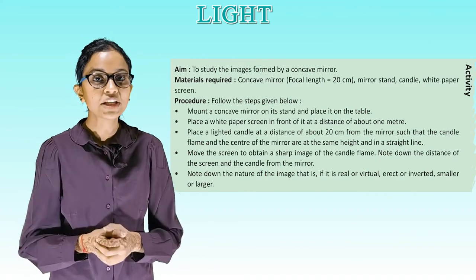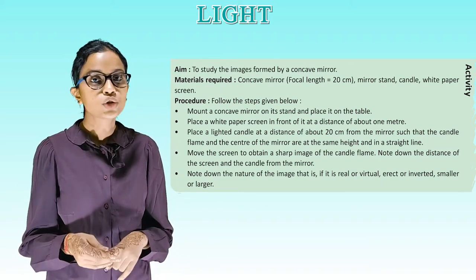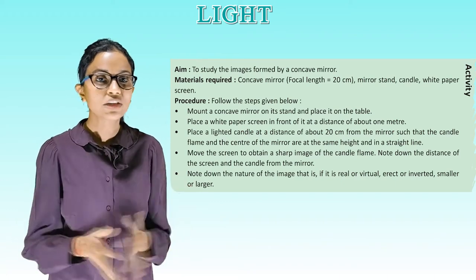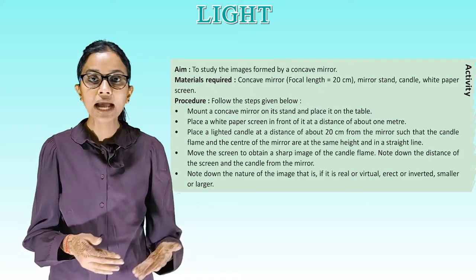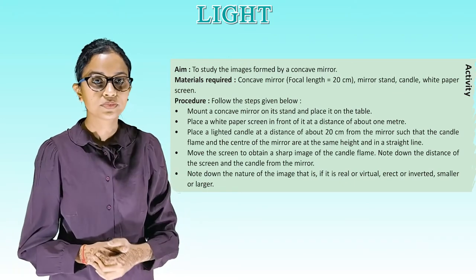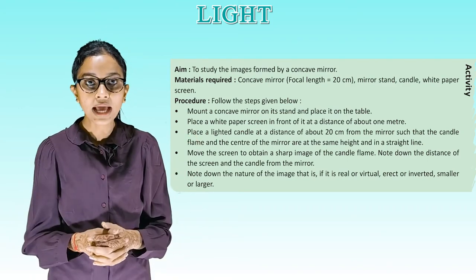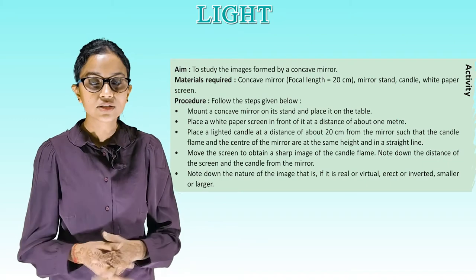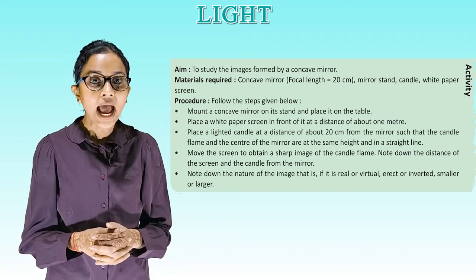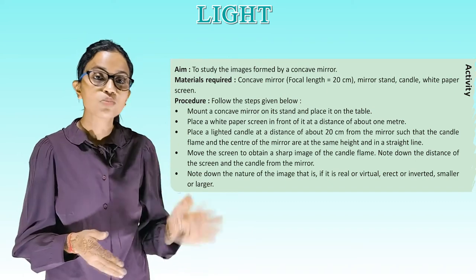Activity — aim: to study the image formed by a concave mirror. Materials required: a concave mirror (focal length = 20 cm), mirror stand, candle, white paper screen. Procedure: mount the concave mirror on its stand on a table. Place a white paper screen in front at about 1 meter. Place a lighted candle at about 20 cm from the mirror so that the candle flame and center of the mirror are at the same height. Move the screen to obtain a sharp image. Note the distances and the nature of the image — whether real or virtual, erect or inverted, smaller or larger.